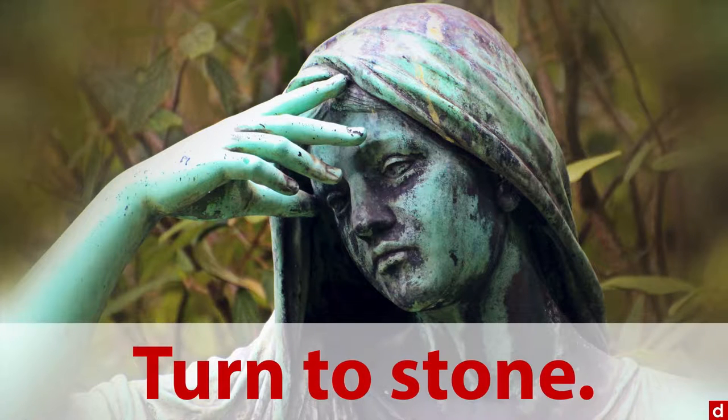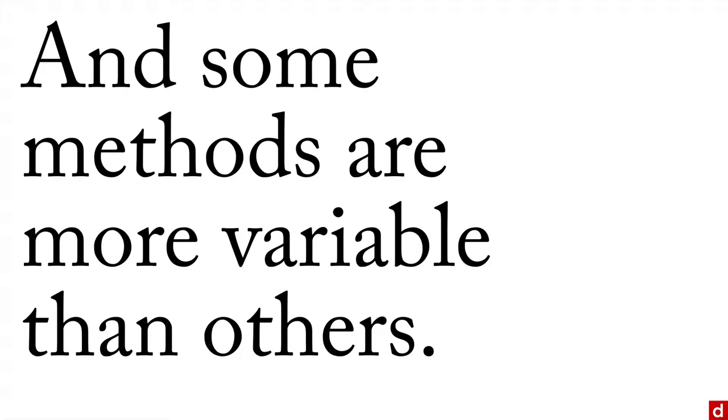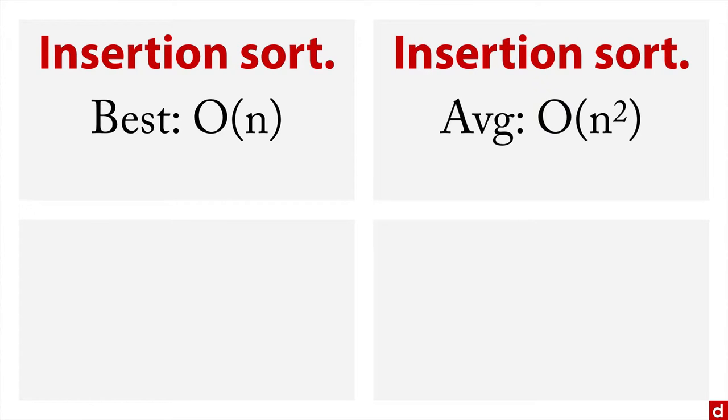The other thing to know about this is not only do some things take longer than others, some of these methods, some functions are more variable than others. So for instance, if you're working with data that you want to sort, there are different kinds of sorts or sorting methods. So for instance, there's something called an insertion sort. And what you find is that on its best day, it's linear, it's O of N, that's not bad. On the other hand, the average is quadratic. And that's a huge difference between the two.